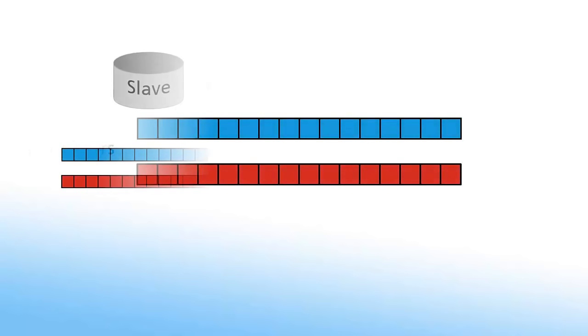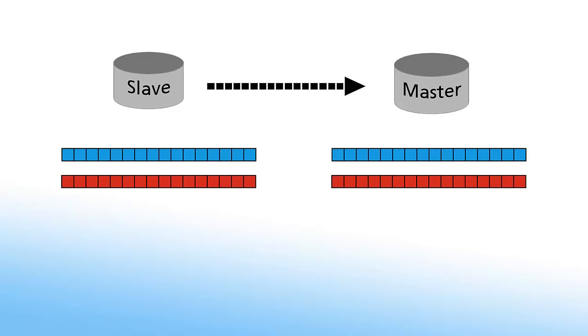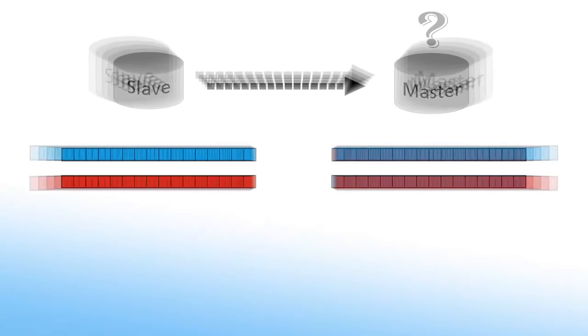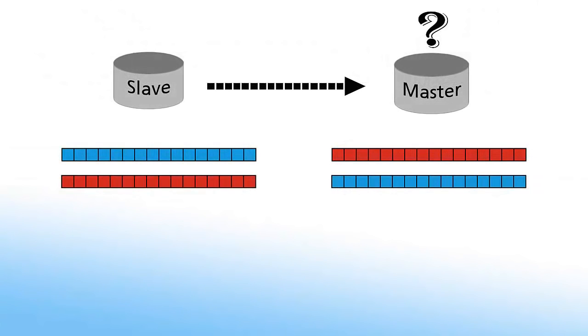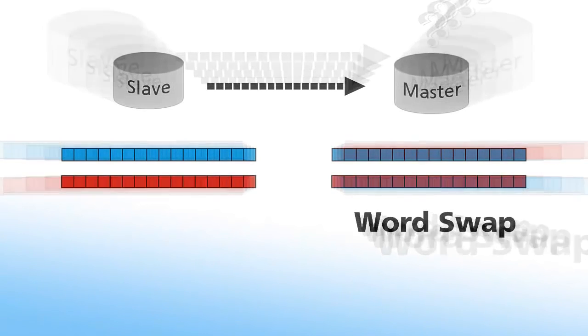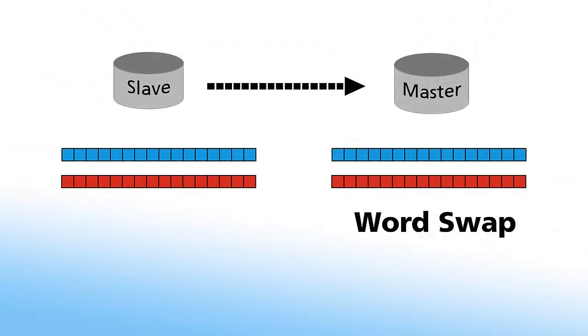The order that bytes or words are sent in doesn't matter as long as the receiving device knows which way they are ordered. If the data is not appearing correctly because the byte or word order is incorrect, ProSoft products feature a byte and word swap function, which will reverse the order in which the data is stored and sent, resolving the issue instantly.